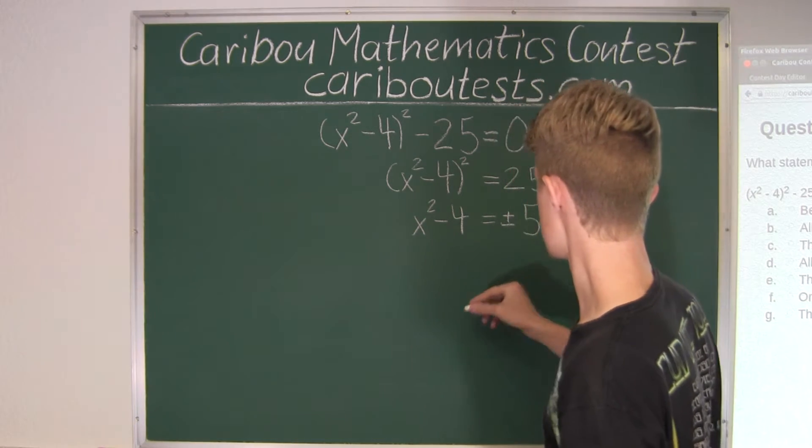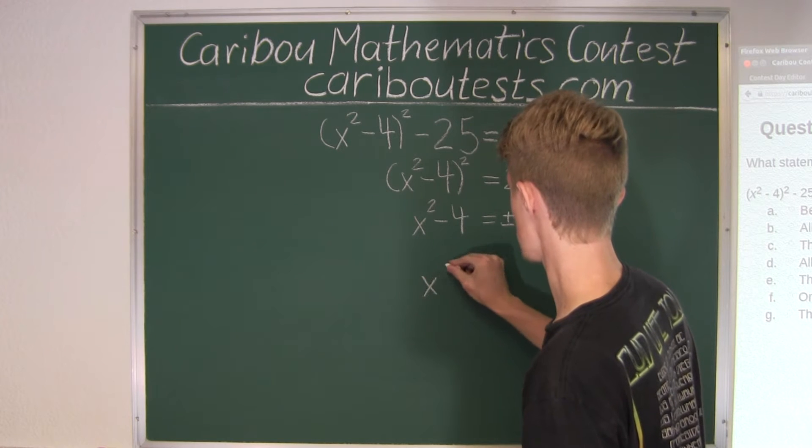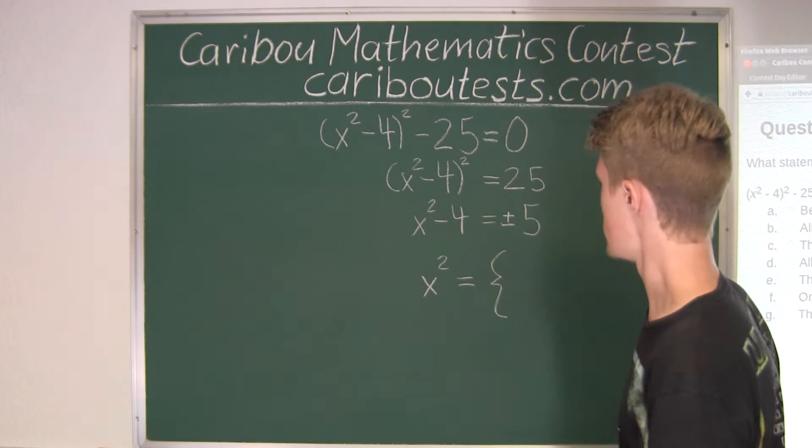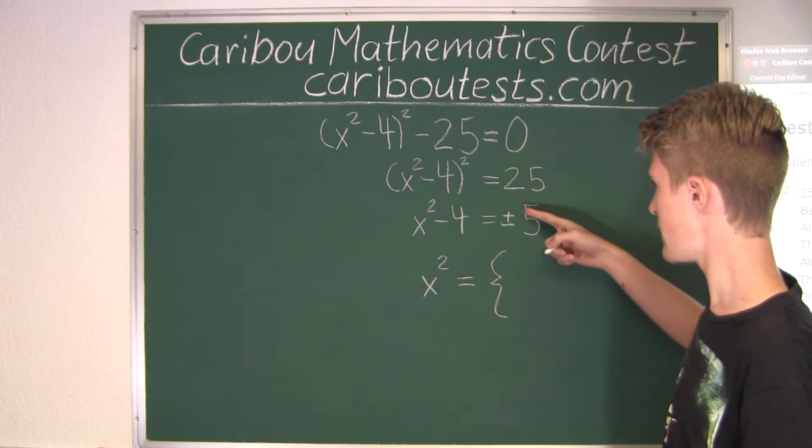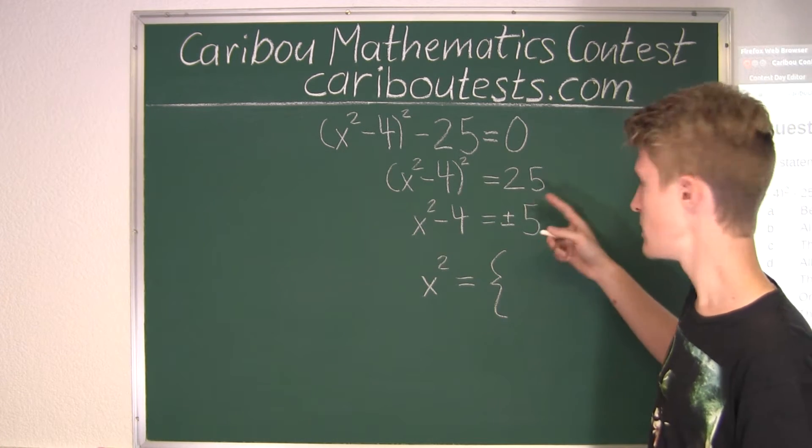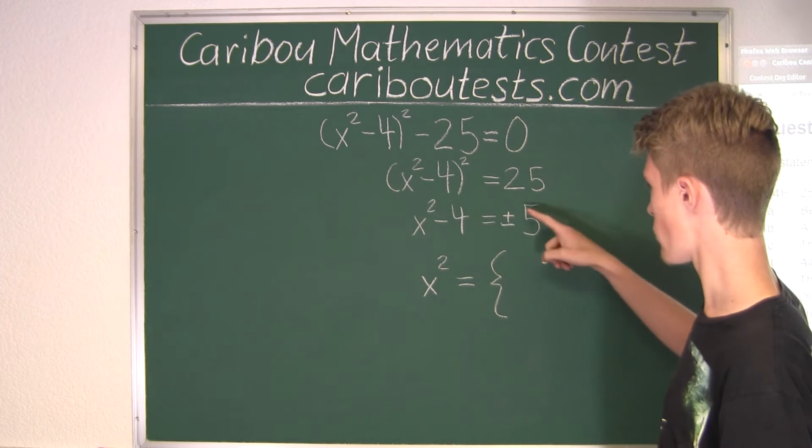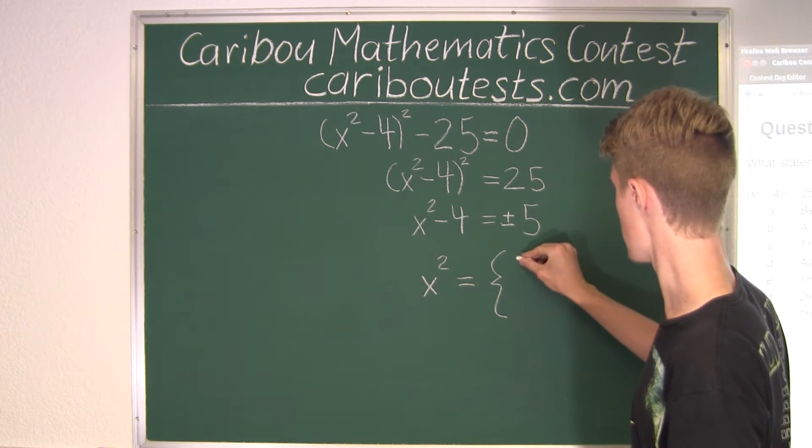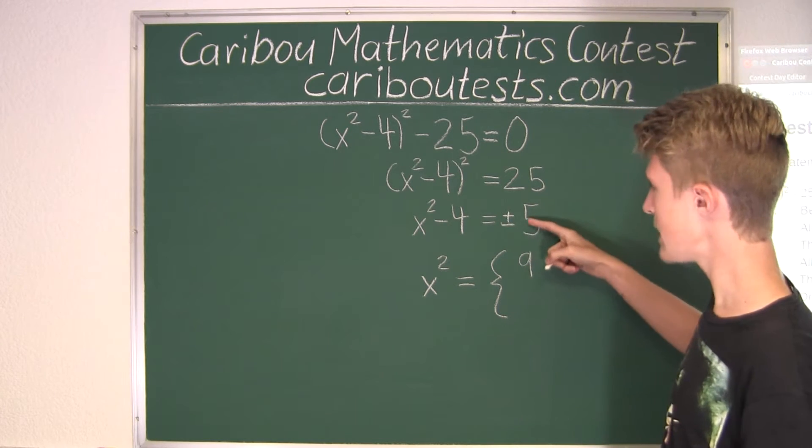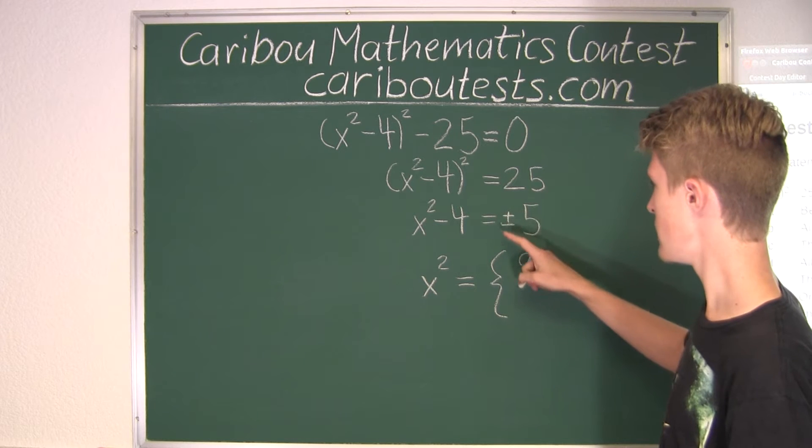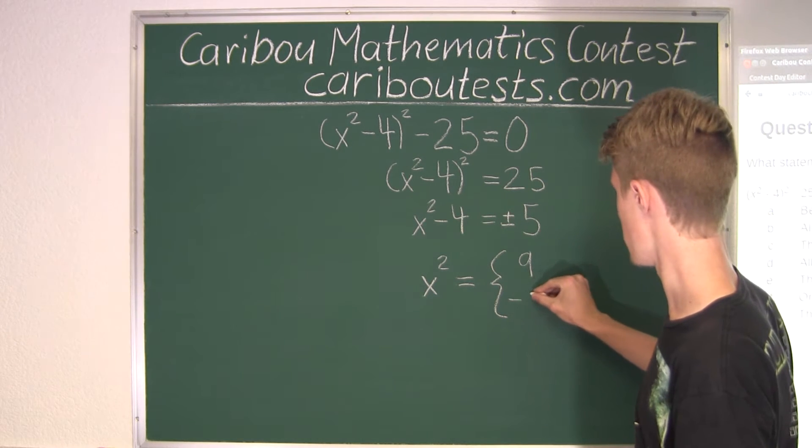Alright, so if we have just x squared, we bring... First we would have plus 5 being equal to the answer, and then we would have the negative 4 brought on the other side is 4 plus 5 is 9. And then for negative 5, bringing negative 4 on this side is just 4, and then 4 minus 5 would be negative 1.